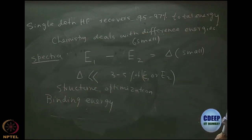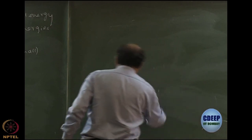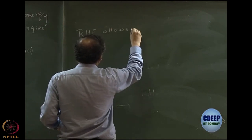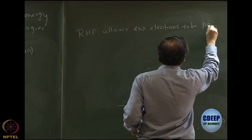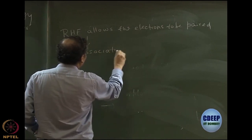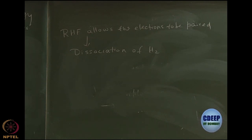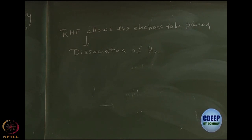This problem appears in spectroscopy, structure optimization, and binding energies — all of which involve differences of large energies. We need methods accurate to less than 1 percent, perhaps 0.4 to 0.5 percent of total energy. The second problem is that restricted Hartree-Fock forces electrons to be paired, which creates serious issues. One clear example is the dissociation of hydrogen. The spin pairing of RHF has much more serious implications beyond what we saw today, and we will return to this problem.